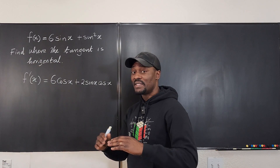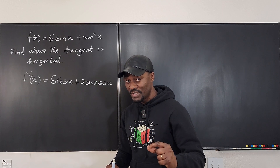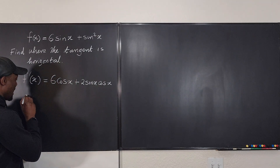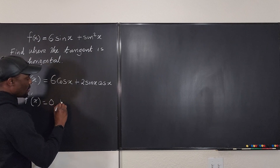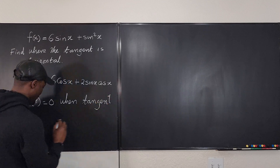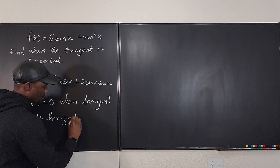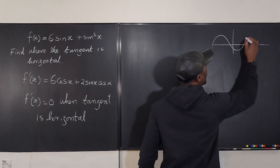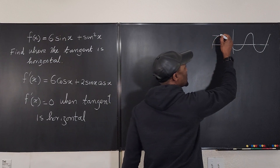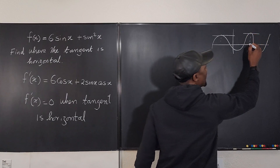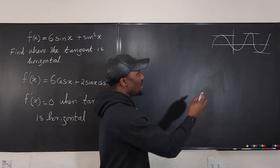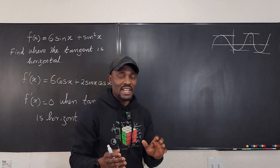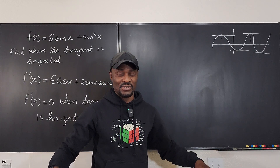Now we know that when the tangent line is horizontal, the derivative of the function is equal to zero, because the tangent line has a slope of zero — all horizontal lines have zero slope. So we're going to say that f prime of x is equal to zero when the tangent is horizontal. You should have this picture in your mind: you're looking for all the points where the tangent line is horizontal. And since there's no restriction on the problem, we're going to get infinitely many answers. Have that at the back of your mind.